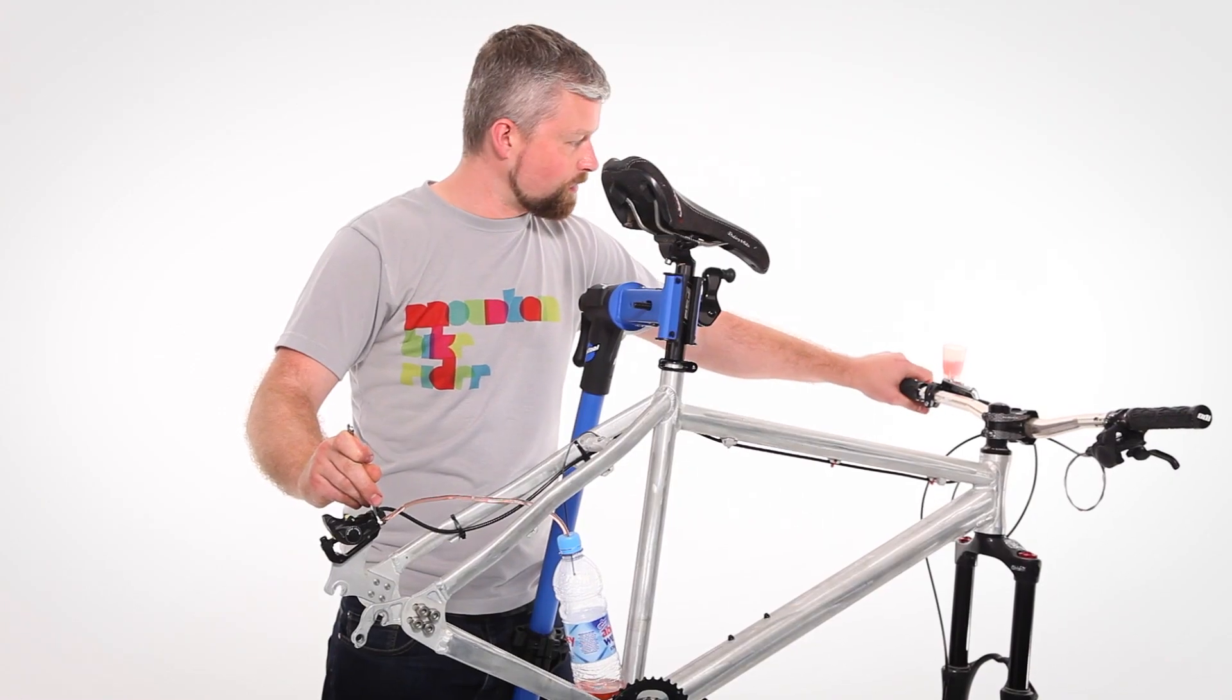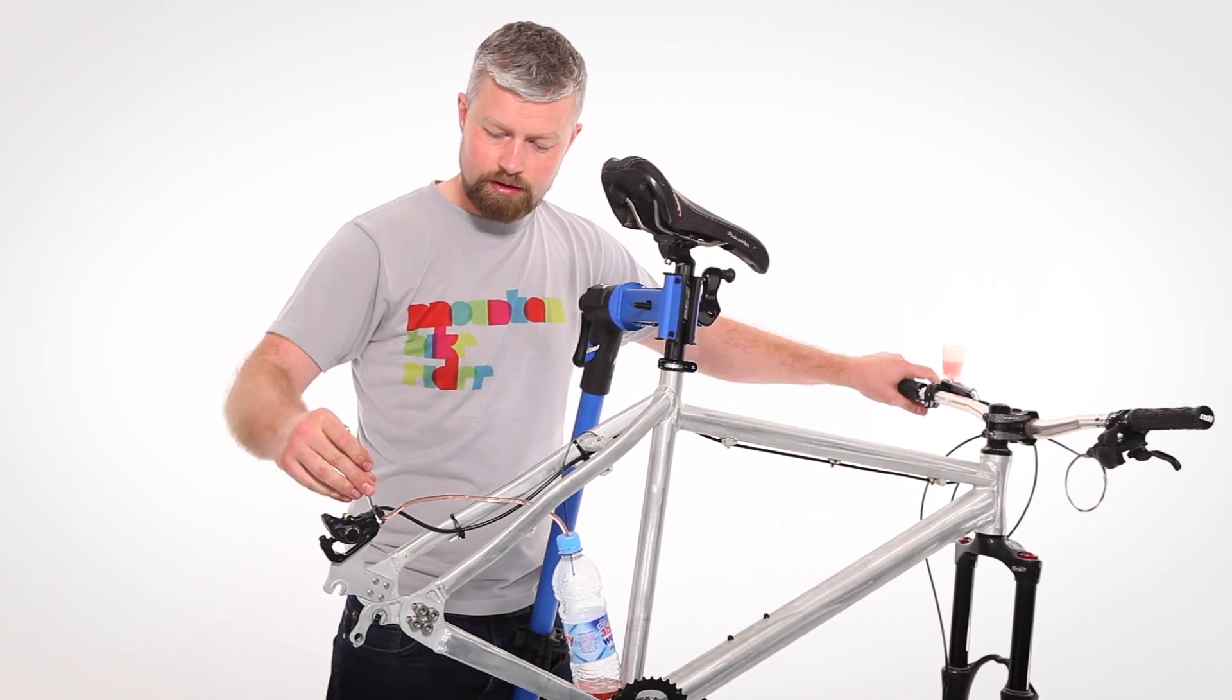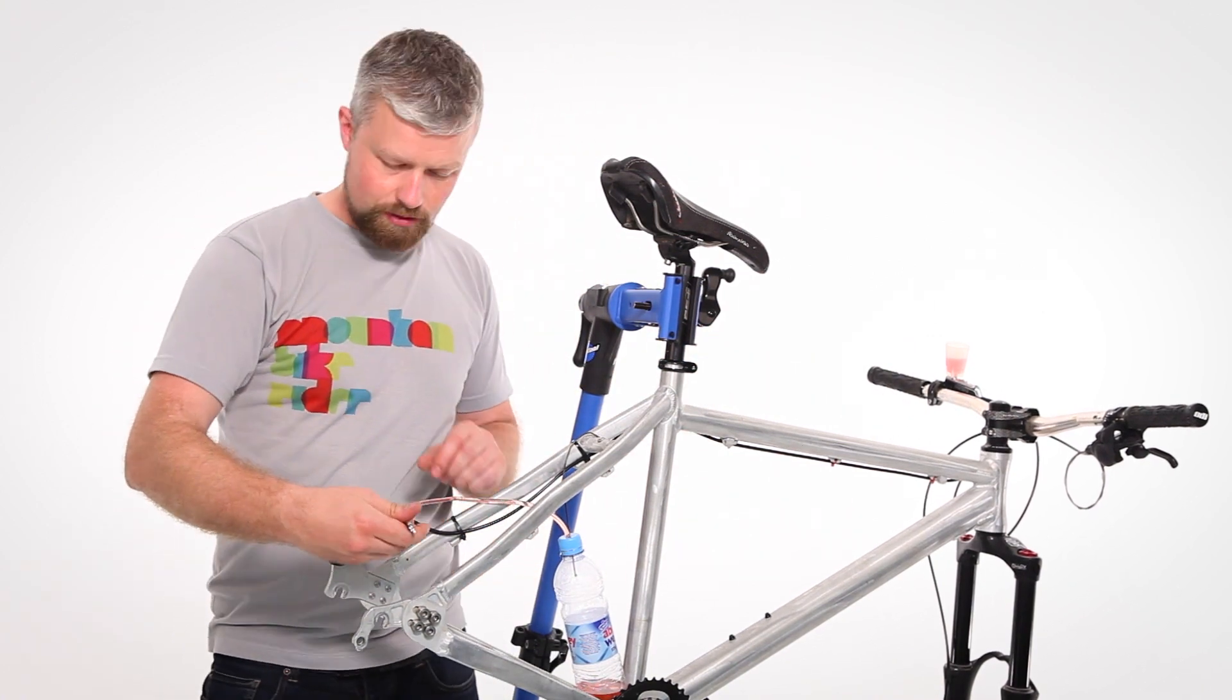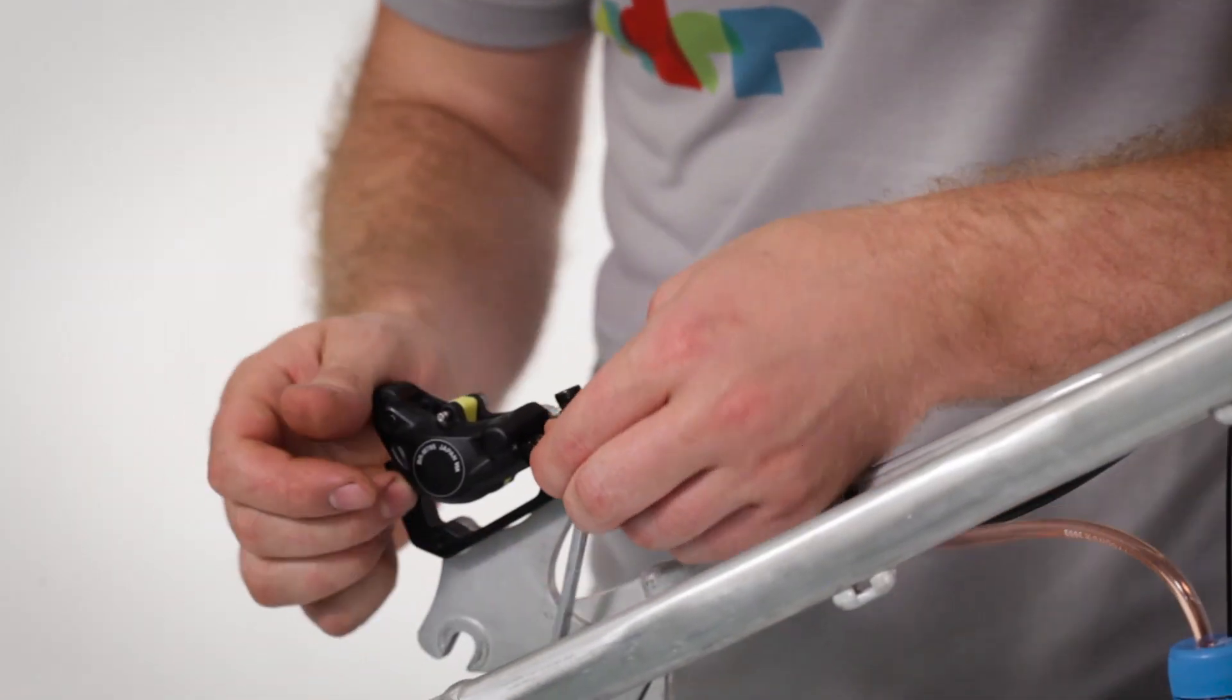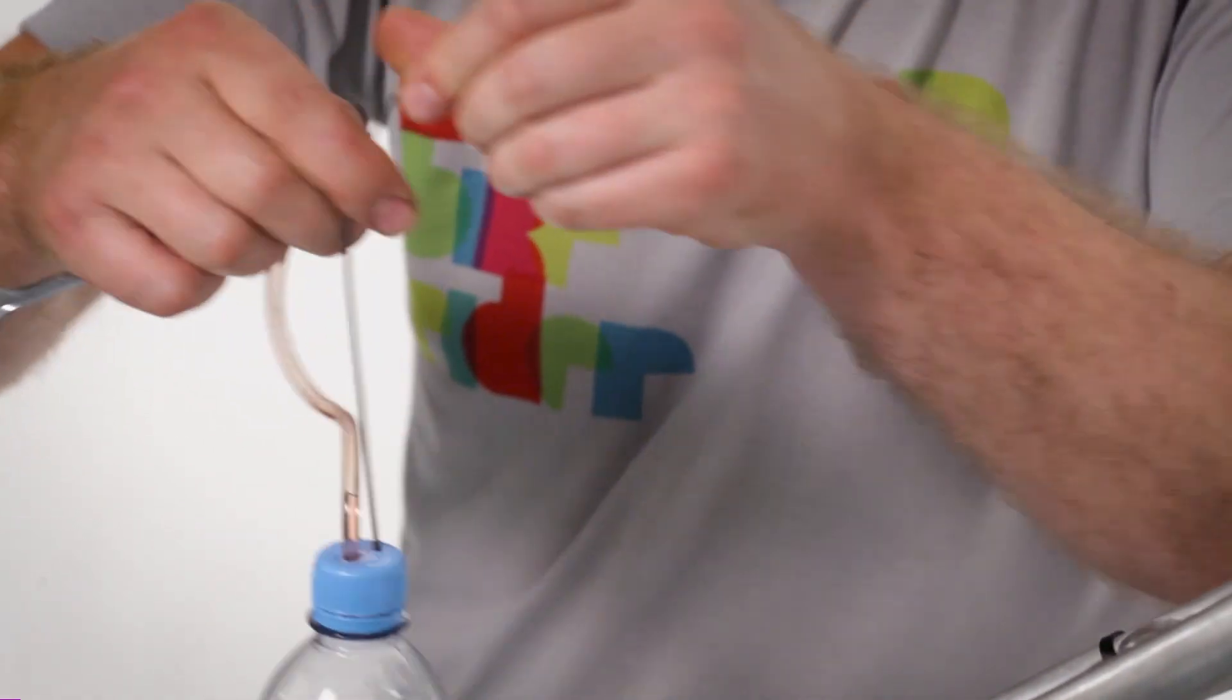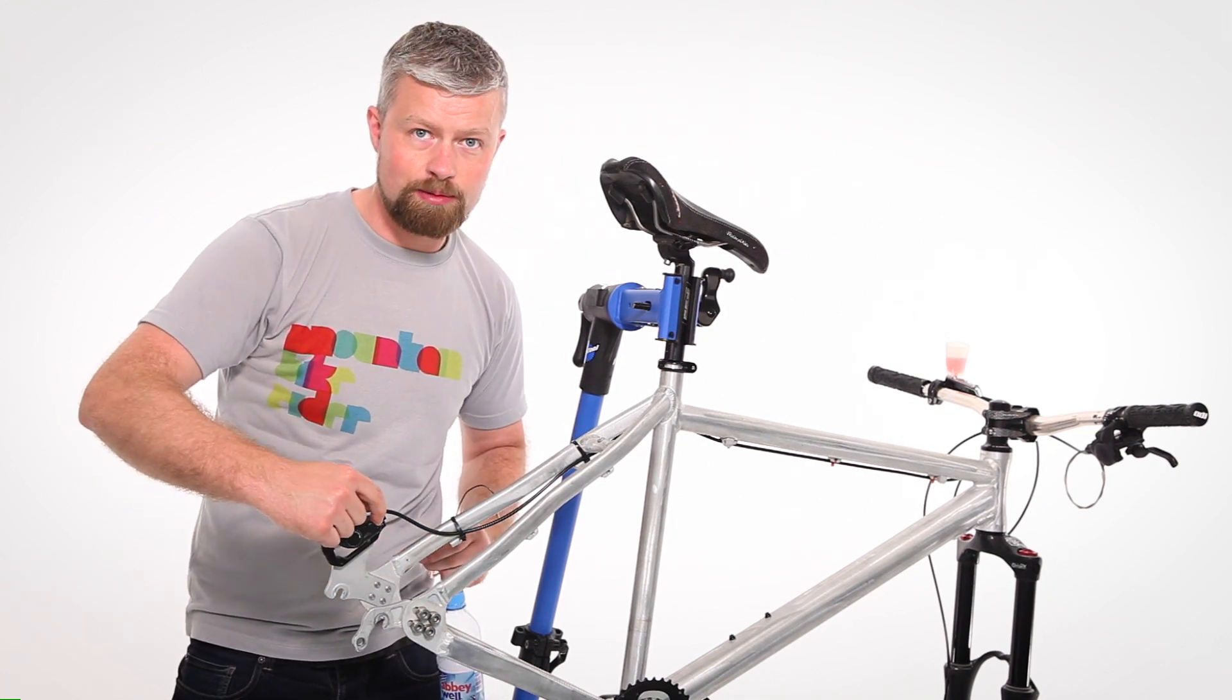With a few pulls on the lever, we should now have a firm bite point. So we've done it at the caliper. Make sure the bleed nipple is nipped up and we can remove our contraption here and refit our little rubber cover to the bleed nipple.